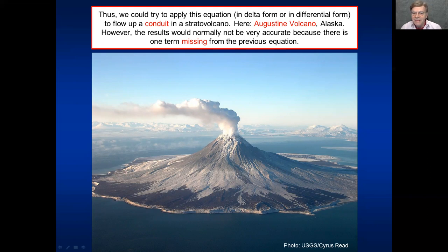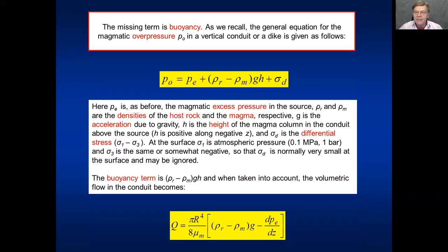So we could try to apply this either in the delta format or in the differential equation format to flow in a conduit in a stratovolcano. Here is the Augustine volcano in Alaska you've seen before, but there is one term missing. There is one term missing from the equation we showed. And what is that term? Well, it's the term buoyancy. It's the term buoyancy. What is buoyancy? Buoyancy is basically this term here. Namely, the difference between the density of the rock on average, the density of the magma, multiplied by acceleration due to gravity and the height of the conduit. It comes an extra factor here, differential stress. And then we have the excess pressure in the chamber when it ruptures and the magma flow starts. This gives rise to the overpressure. So the overpressure is not just the excess pressure, it's the excess pressure plus the buoyancy effect. The buoyancy effect can be negative, neutral, so zero, or positive depending on the difference in density between rock and the magma.